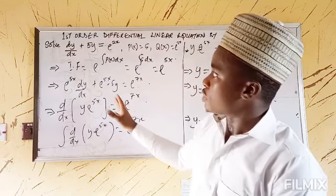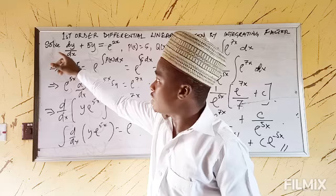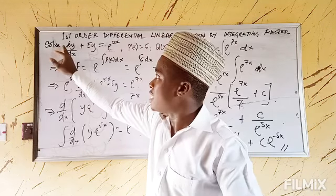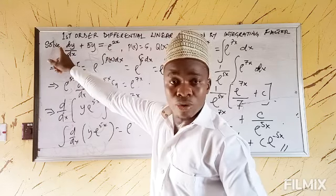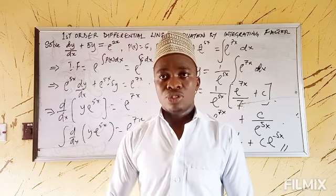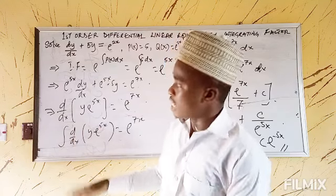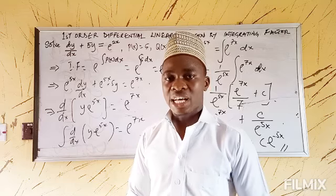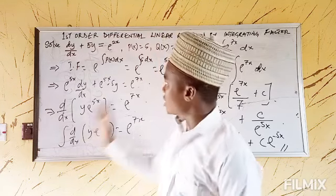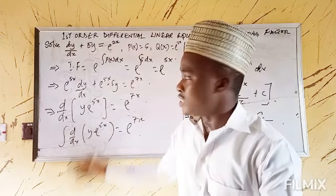That is the solution — y equals e^(2x)/7 plus c·e^(−5x). Another situation you may encounter is when the coefficient of dy/dx is not unity. Definitely you need to divide through by that coefficient before you can relate the equation to the general linear form. I will try to showcase that in subsequent problems. If you have any questions, do not hesitate to ask. Please subscribe to my YouTube channel, hit the bell for notifications, and share with your learning colleagues. Thank you.